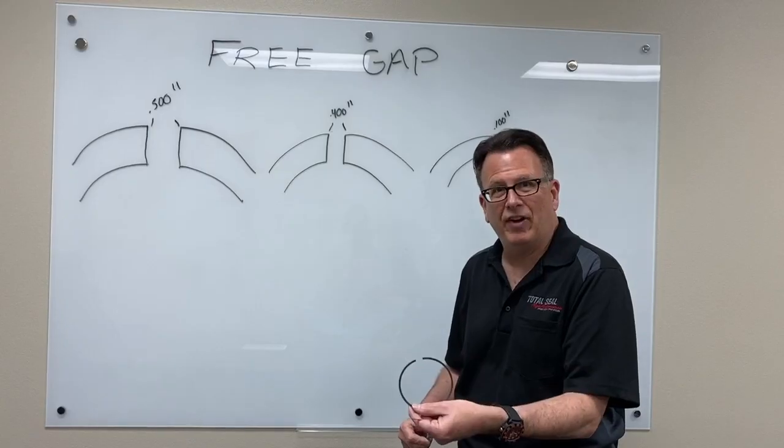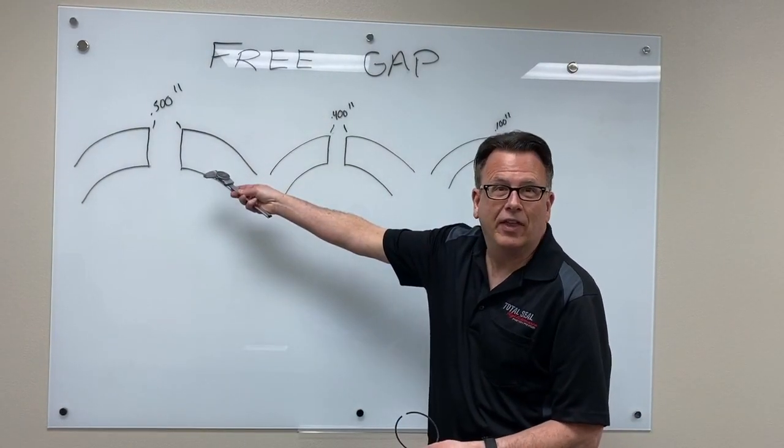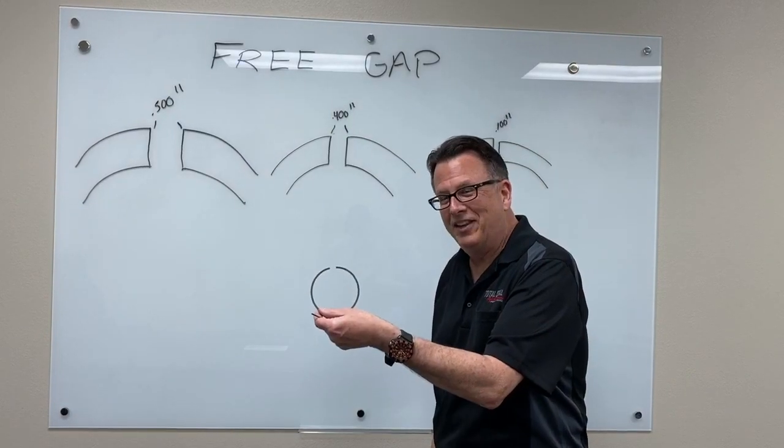In the case of this ring, it's about 500 thousandths. We've got a 500 thousandths free gap, known as free gap. This is the gap prior to going in the engine.